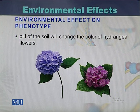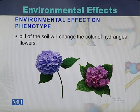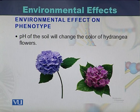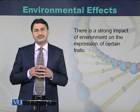The third example of environmental effect is a plant called hydrangea. The hydrangea plant can be of two types depending on the pH of the soil — it can be pink in color or blue in color. If the soil pH changes, the flower color can shift from pink to blue.